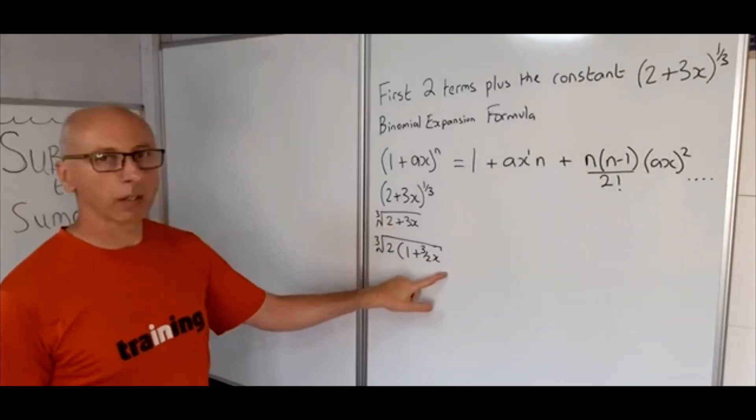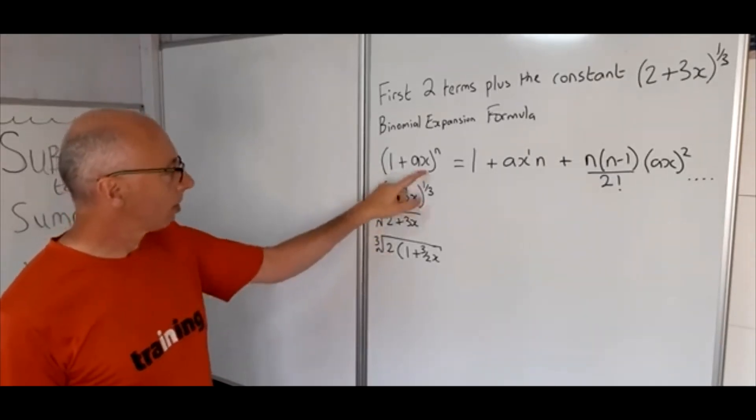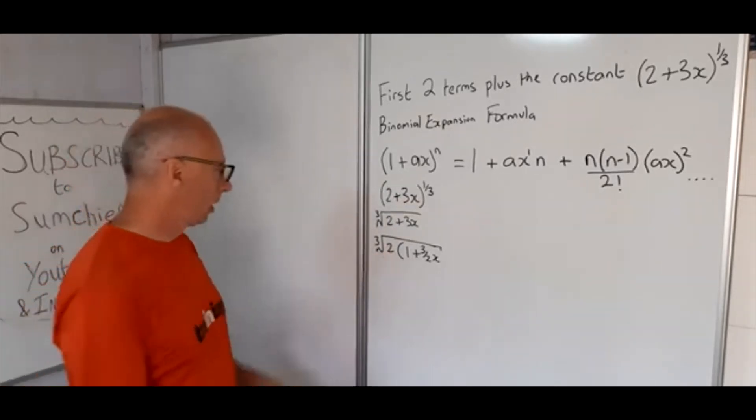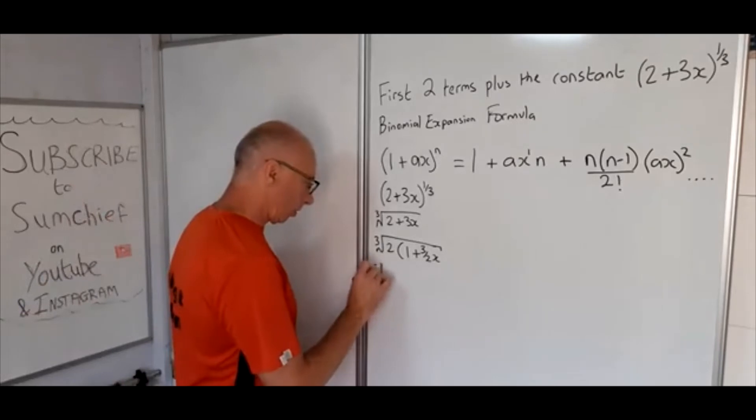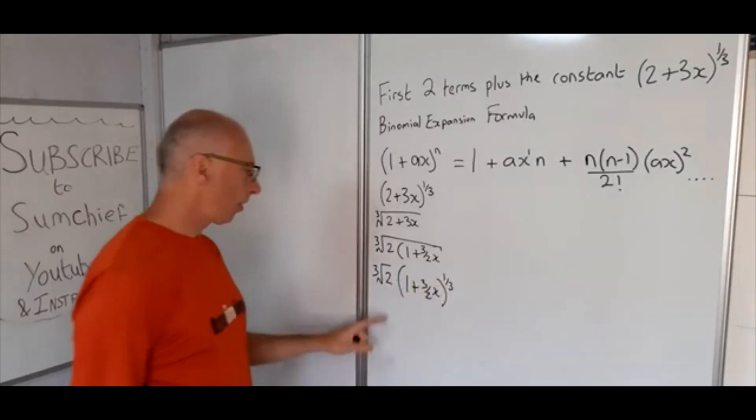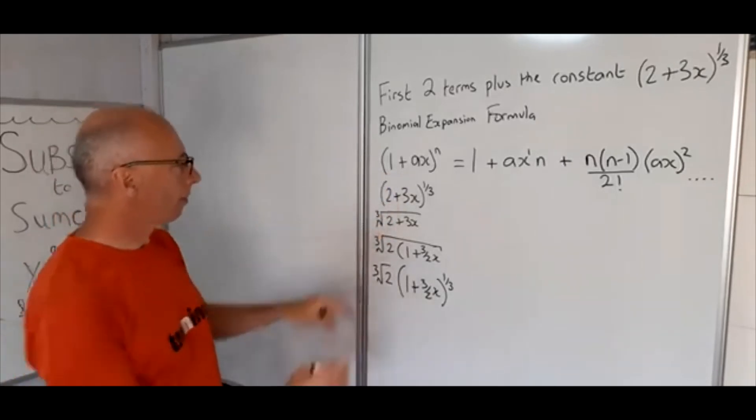Now what we want to do is get rid of this cube root of 2 in the front here because we want it in the form of this. So what we do now is provide ourselves with a multiple: cube root of 2 times (1 + 3/2 x)^(1/3) is equivalent to what we have here.